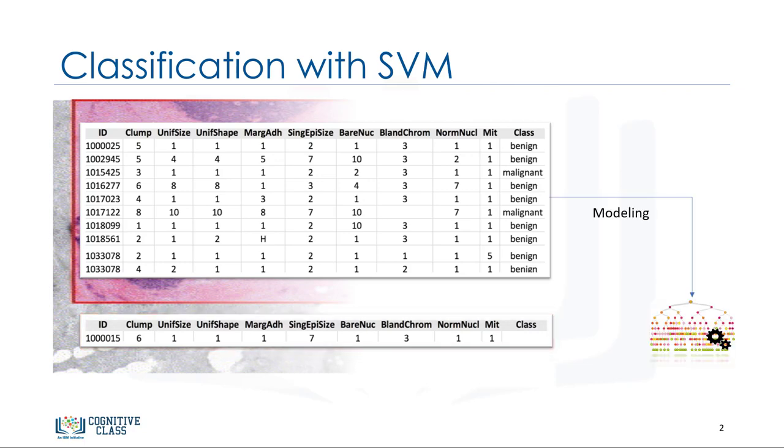You can use Support Vector Machine, or SVM, as a classifier to train your model to understand patterns within the data that might show benign or malignant cells. Once the model has been trained, it can be used to predict your new or unknown cell with rather high accuracy.